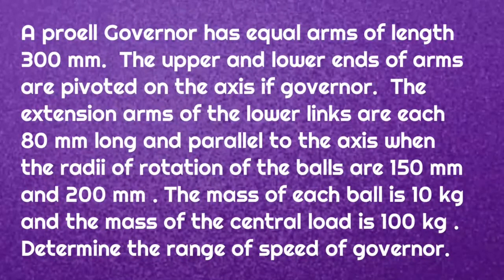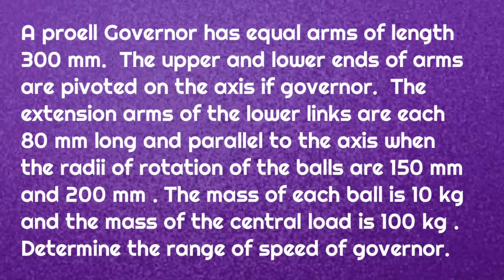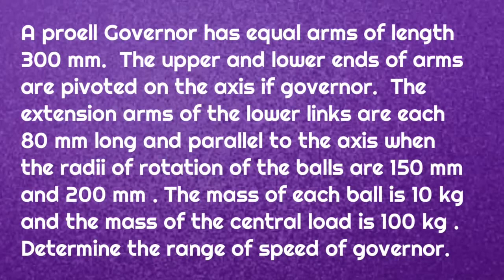A Proell Governor has equal arms of length 300 mm. The upper and lower ends of the arms are pivoted on the axis of the Governor. The extension arms of the lower links are each 80 mm long and parallel to the axis when the radius of rotation of the balls is 150 mm and 200 mm. The mass of each ball is 10 kg and the mass of the central load is 100 kg.